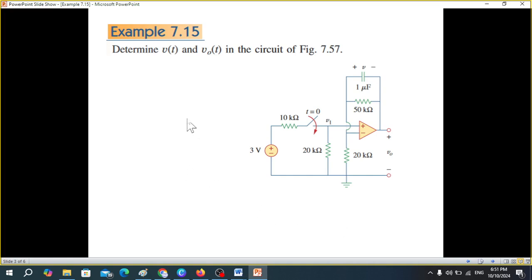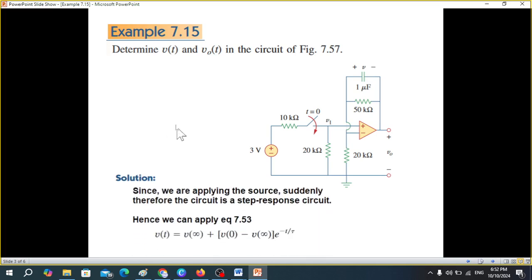Now let's come on to the circuit example. Determine V(t) and Vo(t), so we have to find the Vo(t) or Vout(t) and also we have to find the voltage across the capacitor. So since we are applying this source suddenly, therefore the circuit is a step response circuit and so we have to find this equation. And in this equation as we already discussed, we need to find tau, we need to find V(0), we need to find V infinity.